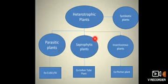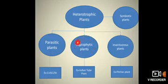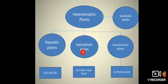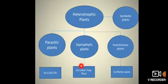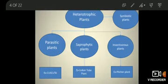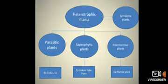The second type of plants are saprophytic plants. They are not having chlorophyll, so they cannot make their own food. They take nutrition from dead and decaying matter. Examples include mushroom and the Indian tube plant, which also takes nutrition from dead and decaying matter.